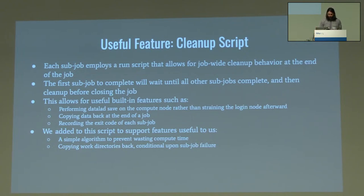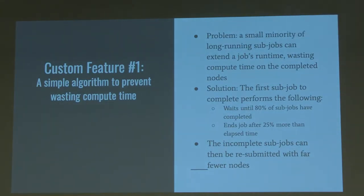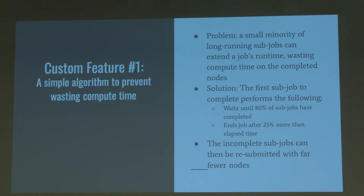You can also copy back data at the end of a job. We added some custom features to the cleanup script. The first was a simple algorithm to prevent wasting compute time. On TACC, if you submit a job with 50 nodes and all complete in five hours except one that takes 20 hours, you're paying for all 50 nodes for 20 hours. So we modified the cleanup script so that rather than waiting for all subjobs to complete, it'll wait for say 80% of them to complete, then give it maybe 25% extra time from that elapsed time, and then clean up. Any one or two that didn't complete can be run separately afterward.